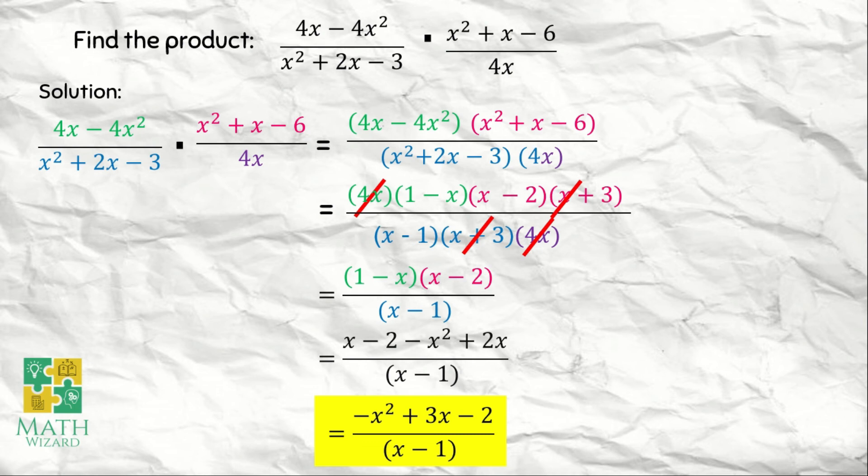If we can still factor it, we can factor it out so we can cancel terms in the numerator and denominator. Since when we factor it out, there's nothing more to cancel between numerator and denominator, then this could be our final answer.